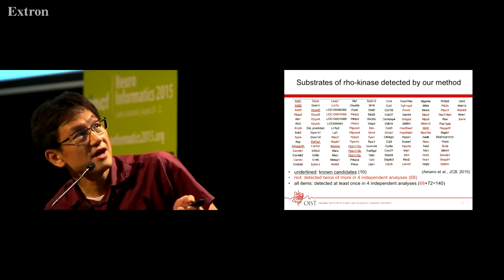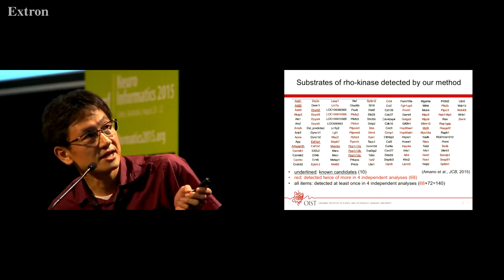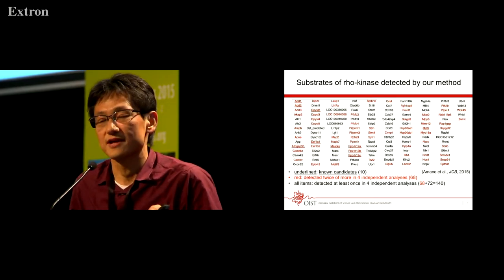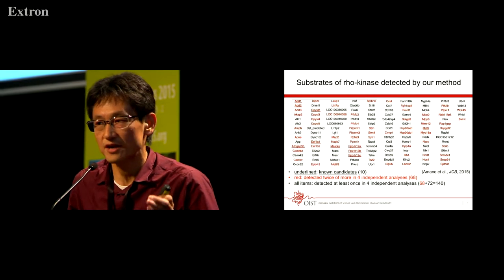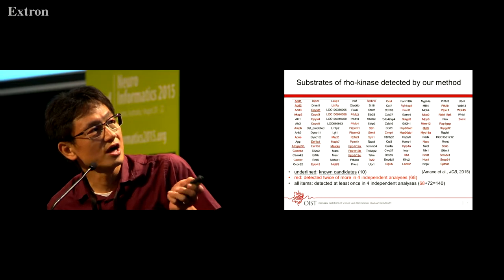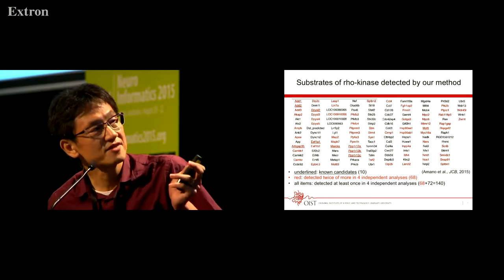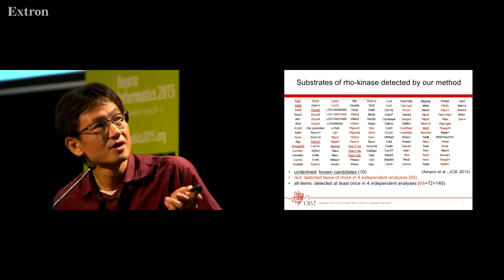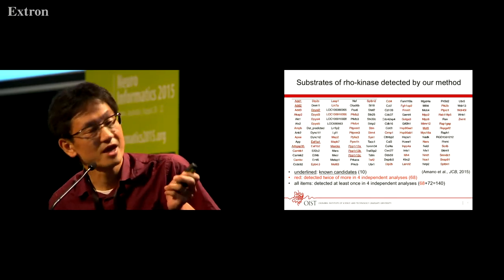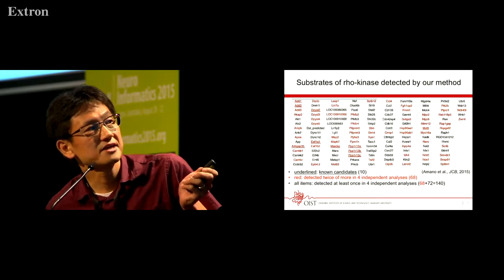As an example, let me show a substrate of the Rho kinase, which is involved in cytoskeletal formation and neural development. This list shows that so far, only 10 substrates were known in the previous papers.